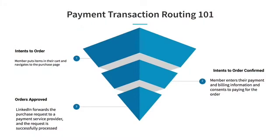For the purposes of payment transaction routing, we can divide the checkout flow into three steps. One is the intent to order, where a member picks up a LinkedIn Premium subscription, places it into their cart, and navigates to the purchase page. Next is the confirmation of the intent to order, where the member enters their payment and billing information and consents to a payment request. Finally, the order gets approved — LinkedIn forwards this purchase request to one of our payment service providers, and ideally this request is successfully processed.